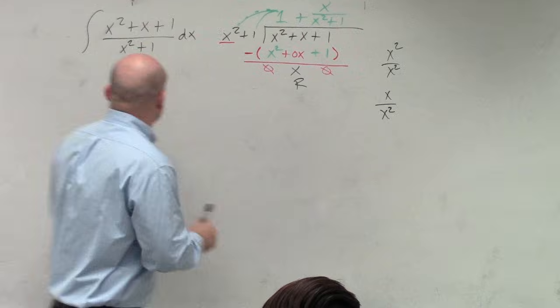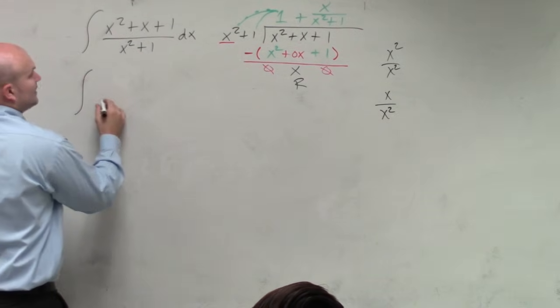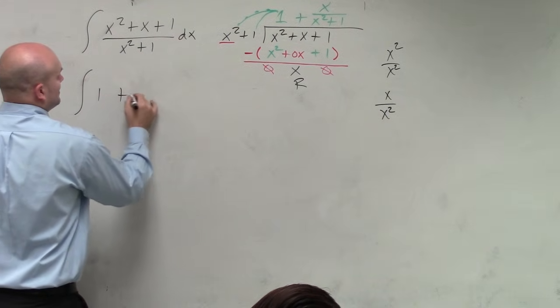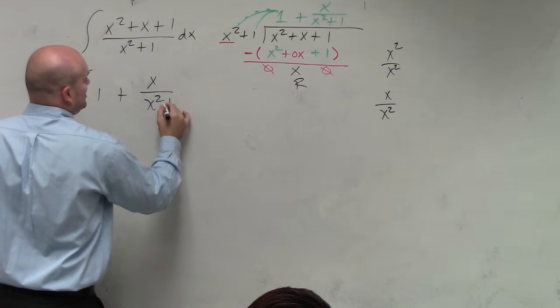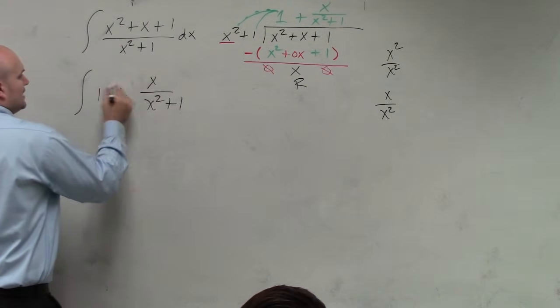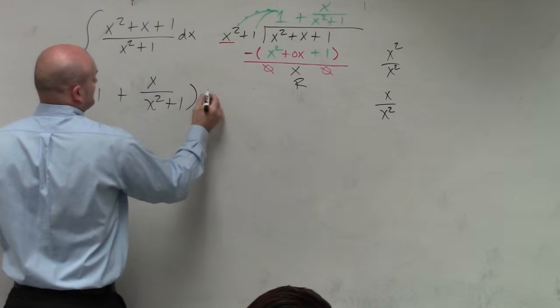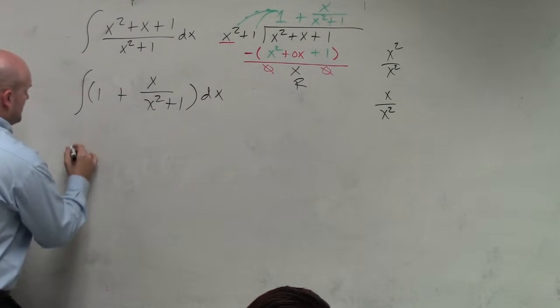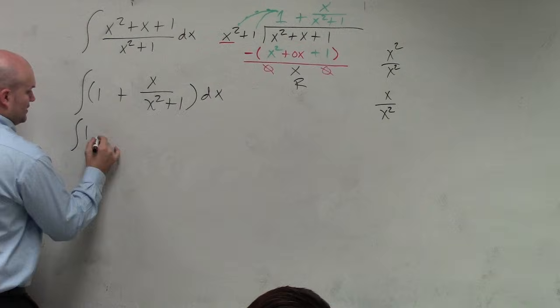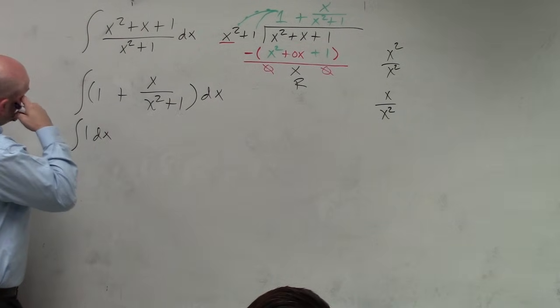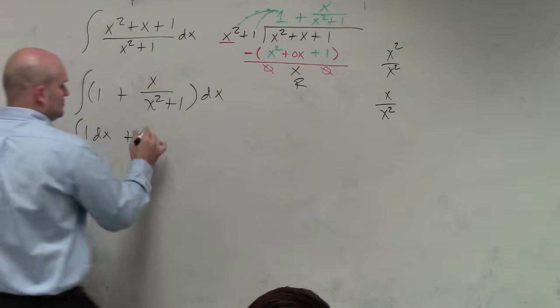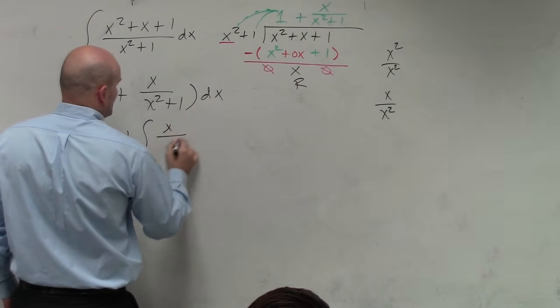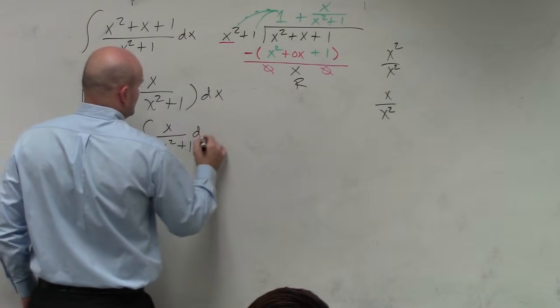All right. So now, let's go back to our integral. And let's write this as 1 plus x over x squared plus 1. And I could rewrite this all as dx. So I could rewrite this as 1 dx. Plus over here, I could see that x over x squared plus 1 dx.